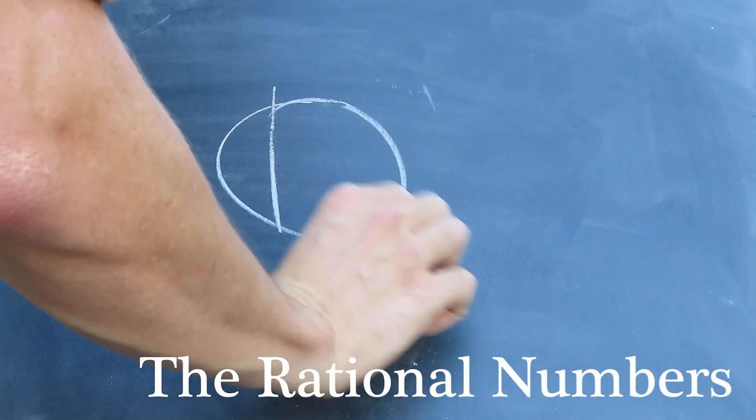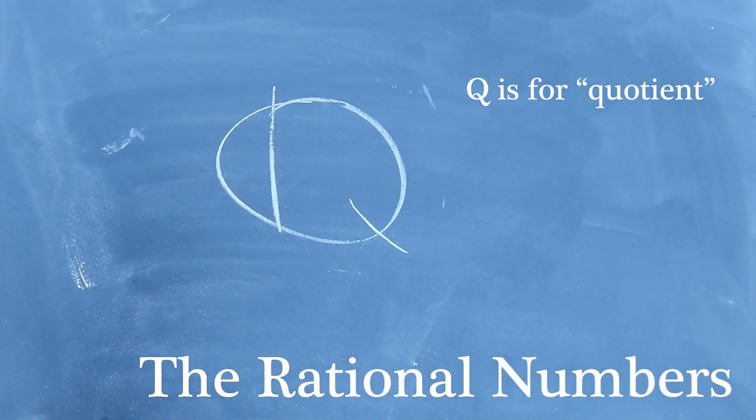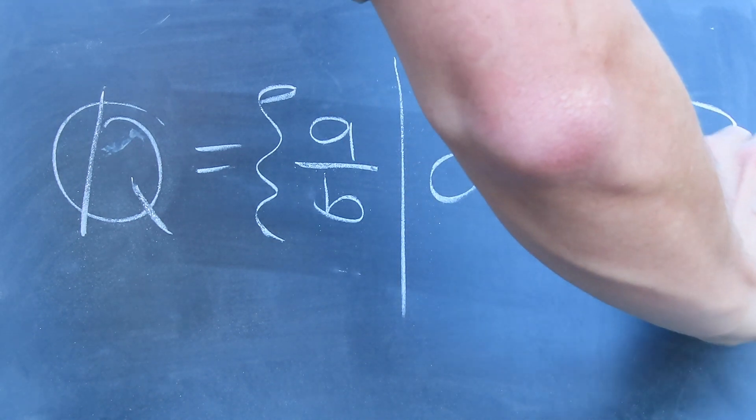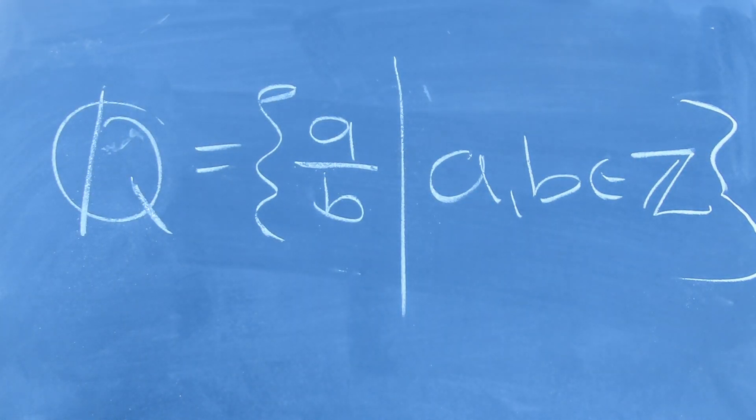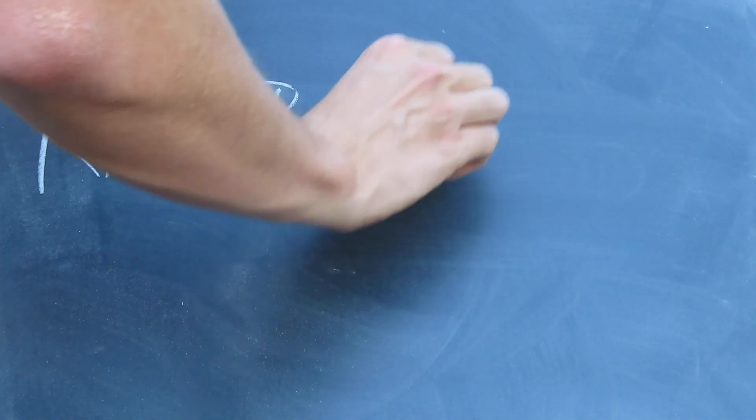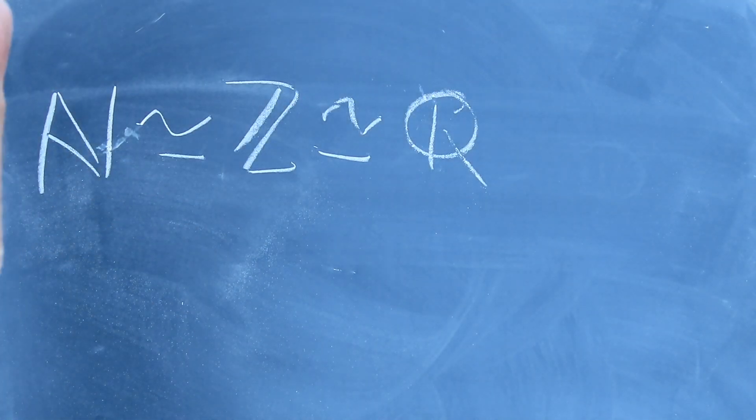By considering pairs of integers, we get Q, or the rational numbers. The rationals are the numbers that we deal with on a day-to-day basis: fractions, decimals, prices — you name it. They are practical numbers. Just as the integers gave us the idea of subtraction, so too do the rationals give us the idea of division. And perhaps the most disturbing thing about the rational numbers comes from their relationship to the natural numbers.